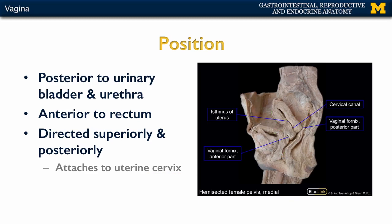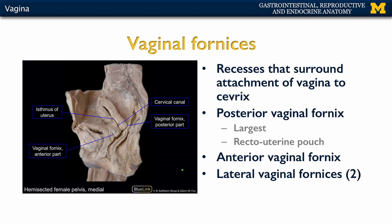The largest is the posterior portion of the fornix. Keep in mind that all the fornices — the posterior, the anterior, and the two lateral vaginal fornices — are continuous. The posterior vaginal fornix is the one most closely associated with the rectouterine pouch, so very close to that peritoneal cavity region.